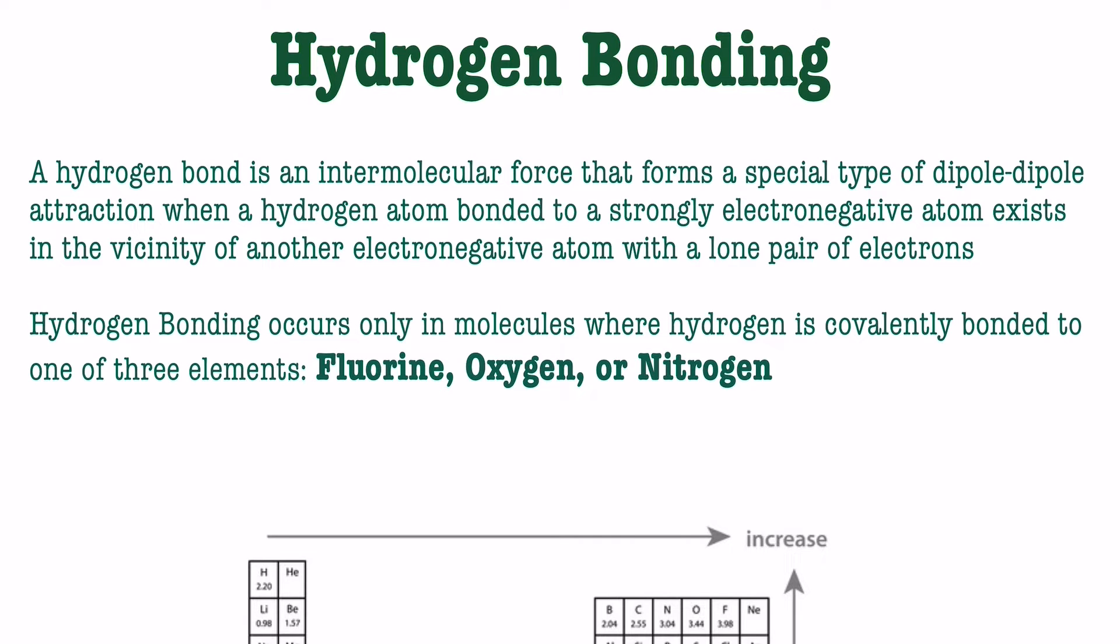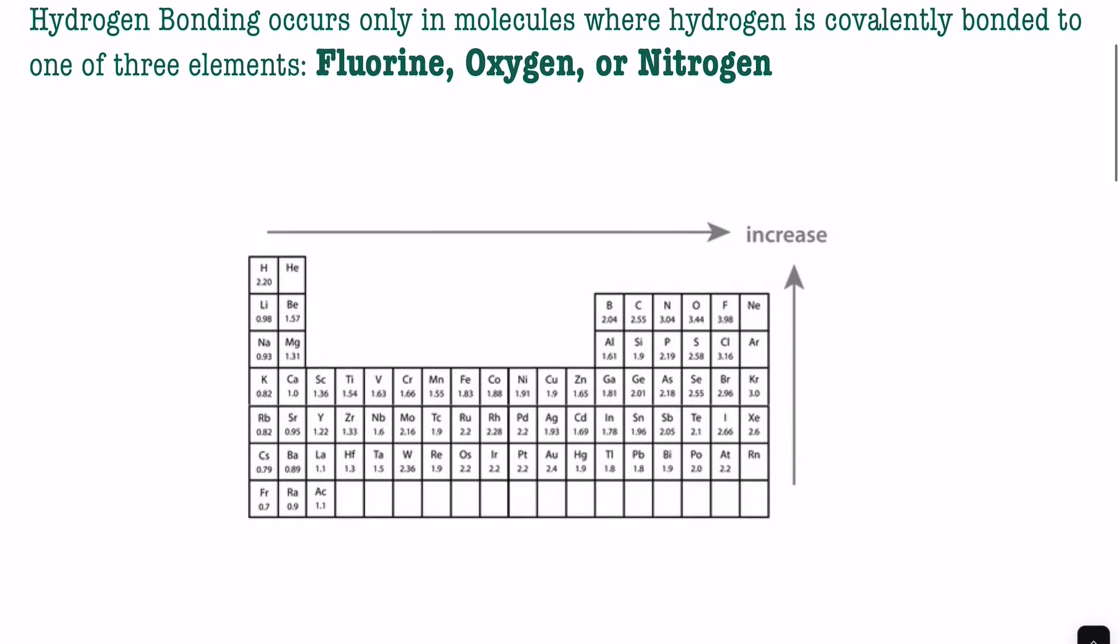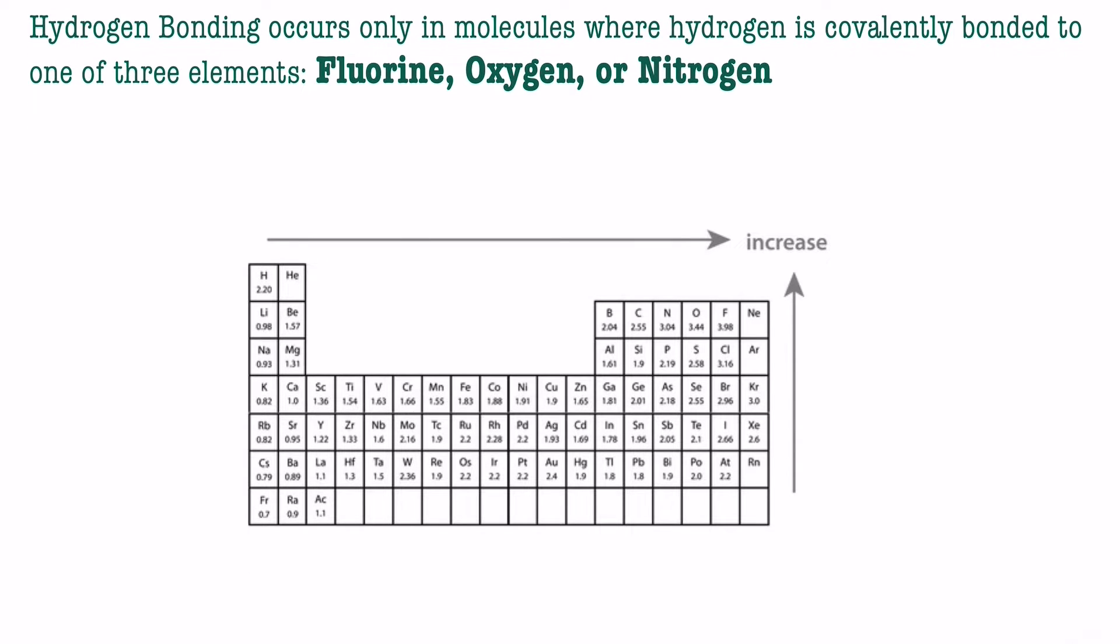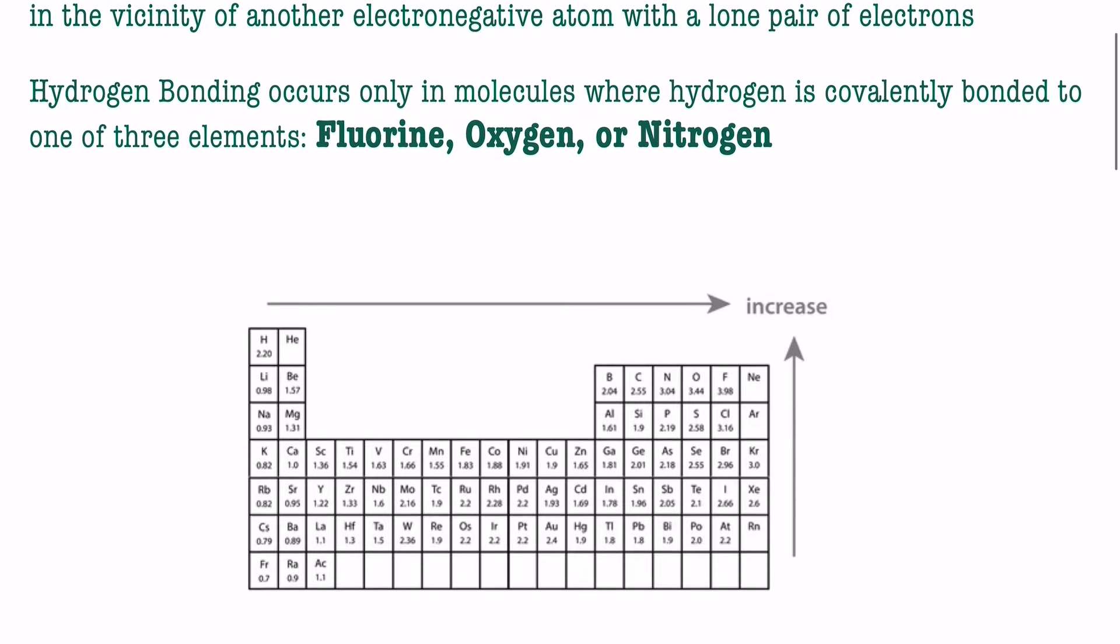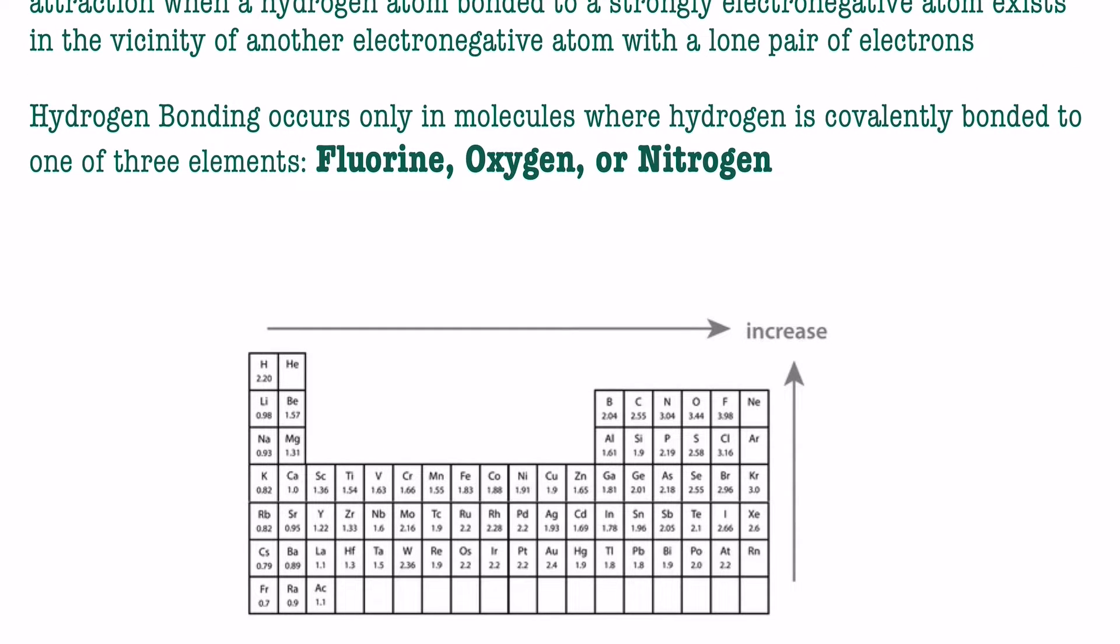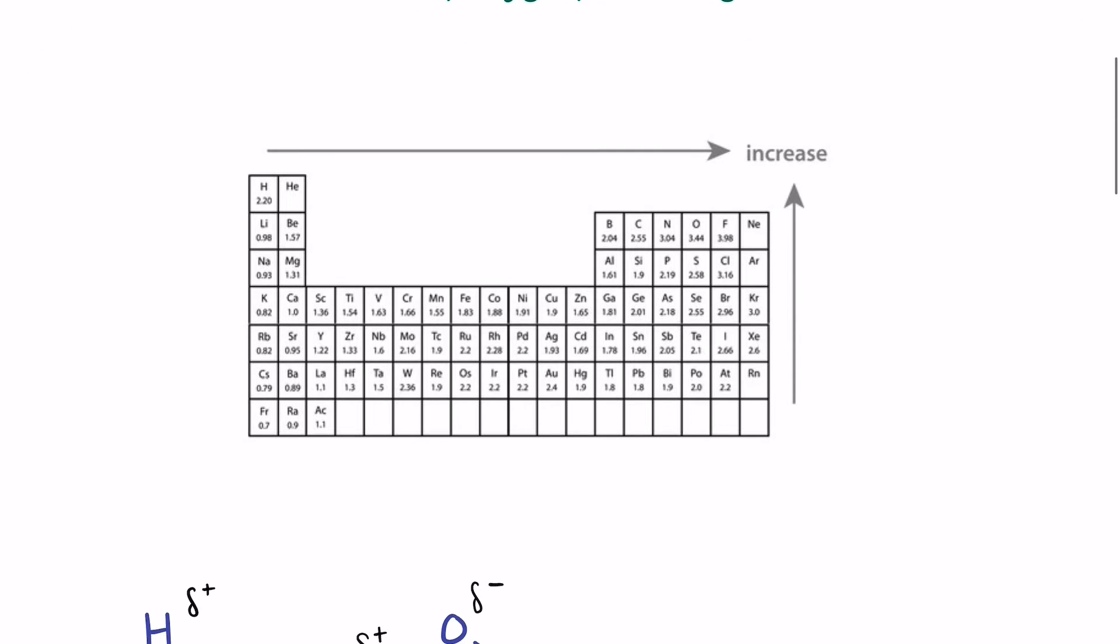But first I want to note that hydrogen bonding occurs only in molecules where hydrogen is covalently bonded to one of three elements, and those elements are fluorine, oxygen, or nitrogen.